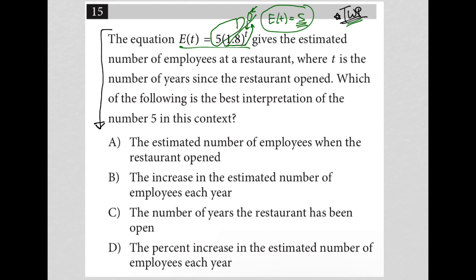Choice A: the estimated number of employees when the restaurant opened. Perfect, love it. Choice B: the increase in the estimated number of employees each year. Definitely not. C: the number of years, has nothing to do with years. D: the percent increase, has nothing to do with percent. So choice A is our correct answer. The estimated number of employees when the restaurant opened. Perfect.